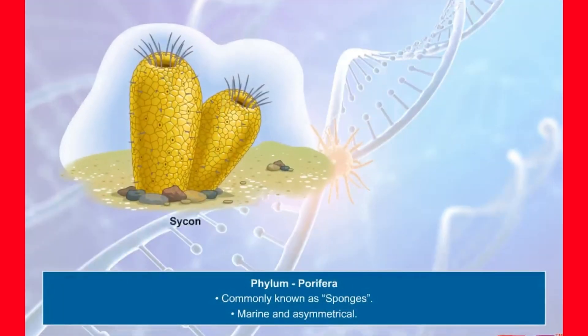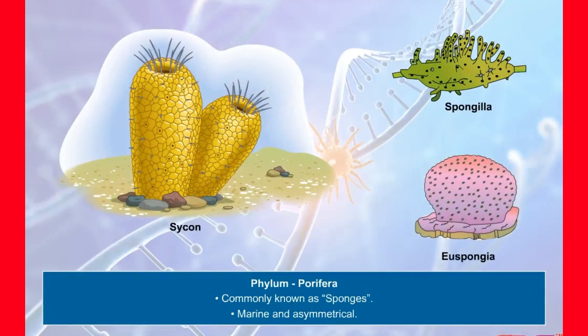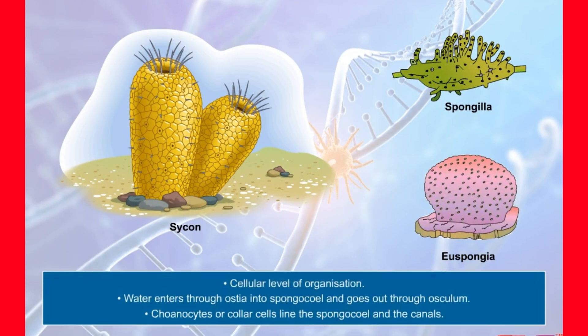Porifera: the members of this phylum are commonly known as sponges. They are usually marine and asymmetrical in nature and exhibit cellular level of organization. Sponges have a water vascular system in which water enters through small pores called ostia into a central cavity called the spongocoel, and then goes out through the osculum. Special cells called choanocytes or collar cells line the spongocoel and the canals.